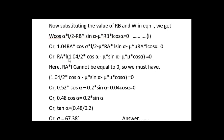Since RA × L cannot be zero (it is a finite nonzero quantity), the bracketed term must equal zero. Solving that bracket gives tan alpha = 0.48 / 0.2, and solving that we get alpha equals 67.38 degrees, which is our required answer.